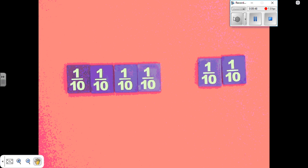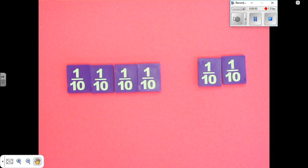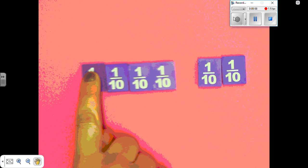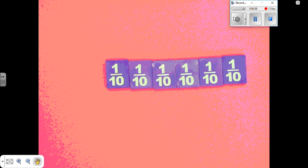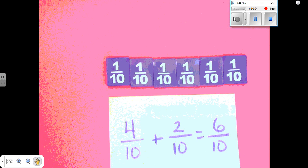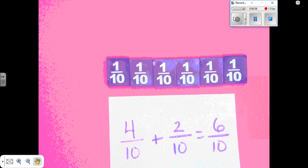Here's one more to try in your notebook. Four tenths plus two tenths. When I put them together, I have six tenths. So four tenths plus two tenths equals six tenths.